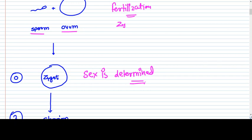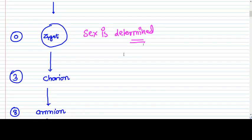The zygote further divides and more and more cells come into existence until the whole baby is formed. But before the baby is formed, the chorions, amnions, and placentas — all these trophoblastic structures — are developed in very early pregnancy. So up to day 3, the chorion is formed. The zygote is formed on day 0, and up to day 3, chorion is formed.